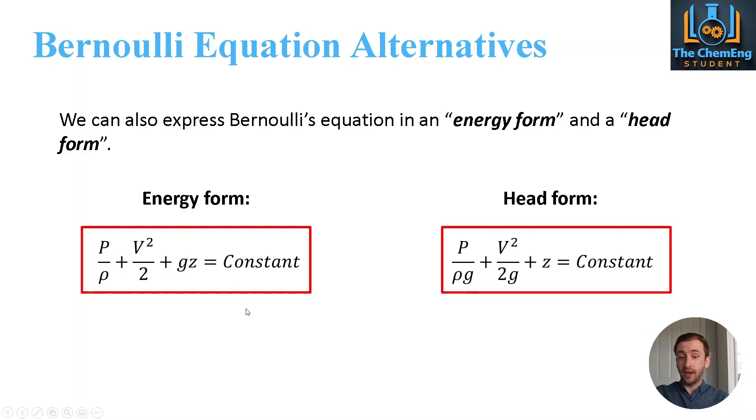In terms of head, because this is basically the energy form here. In terms of head form, that would be the z term. So we now divide all the terms by the gravitational constant and we would get this equation here. And again, make a note that it's always equal to some unknown constant.